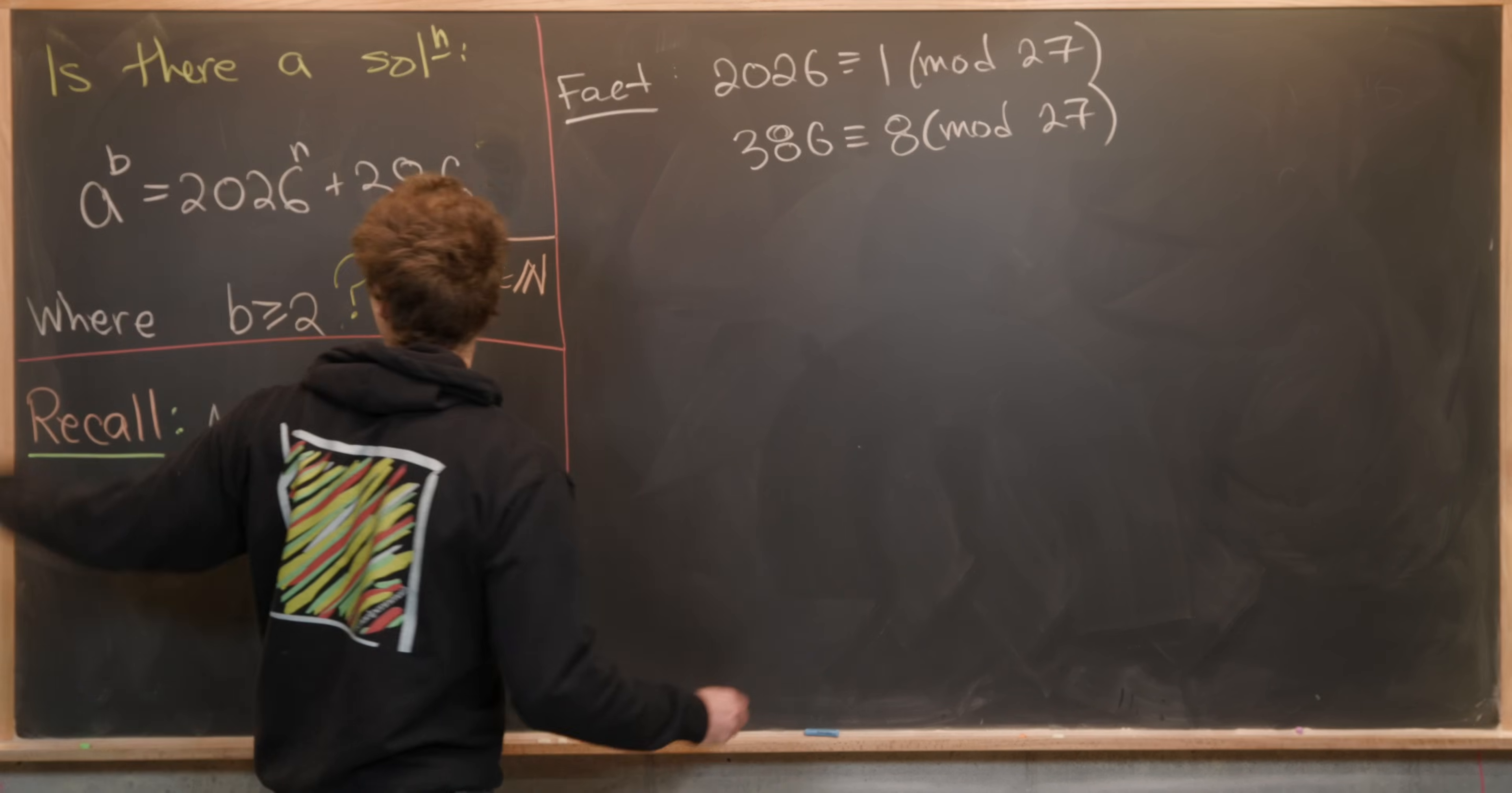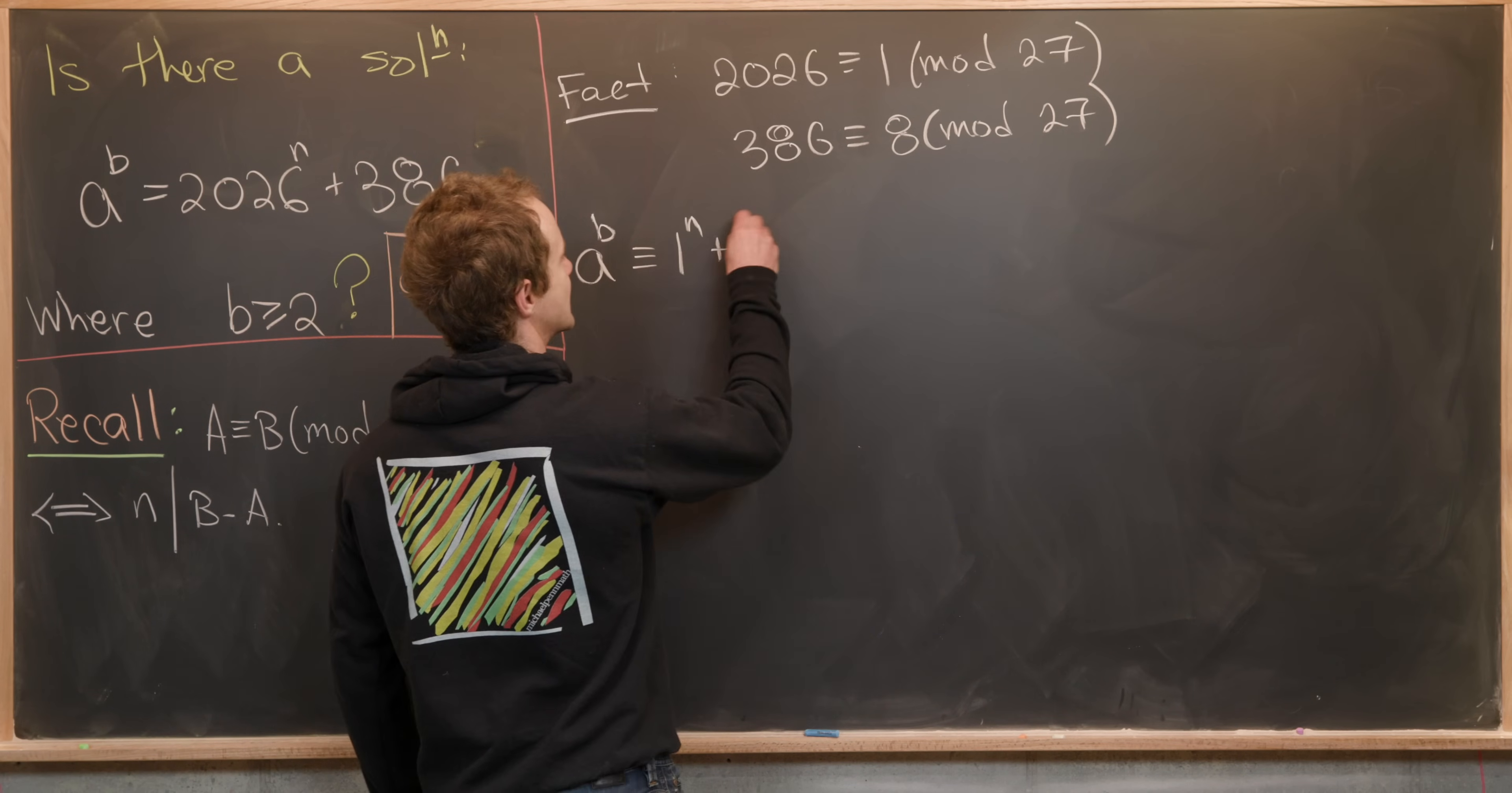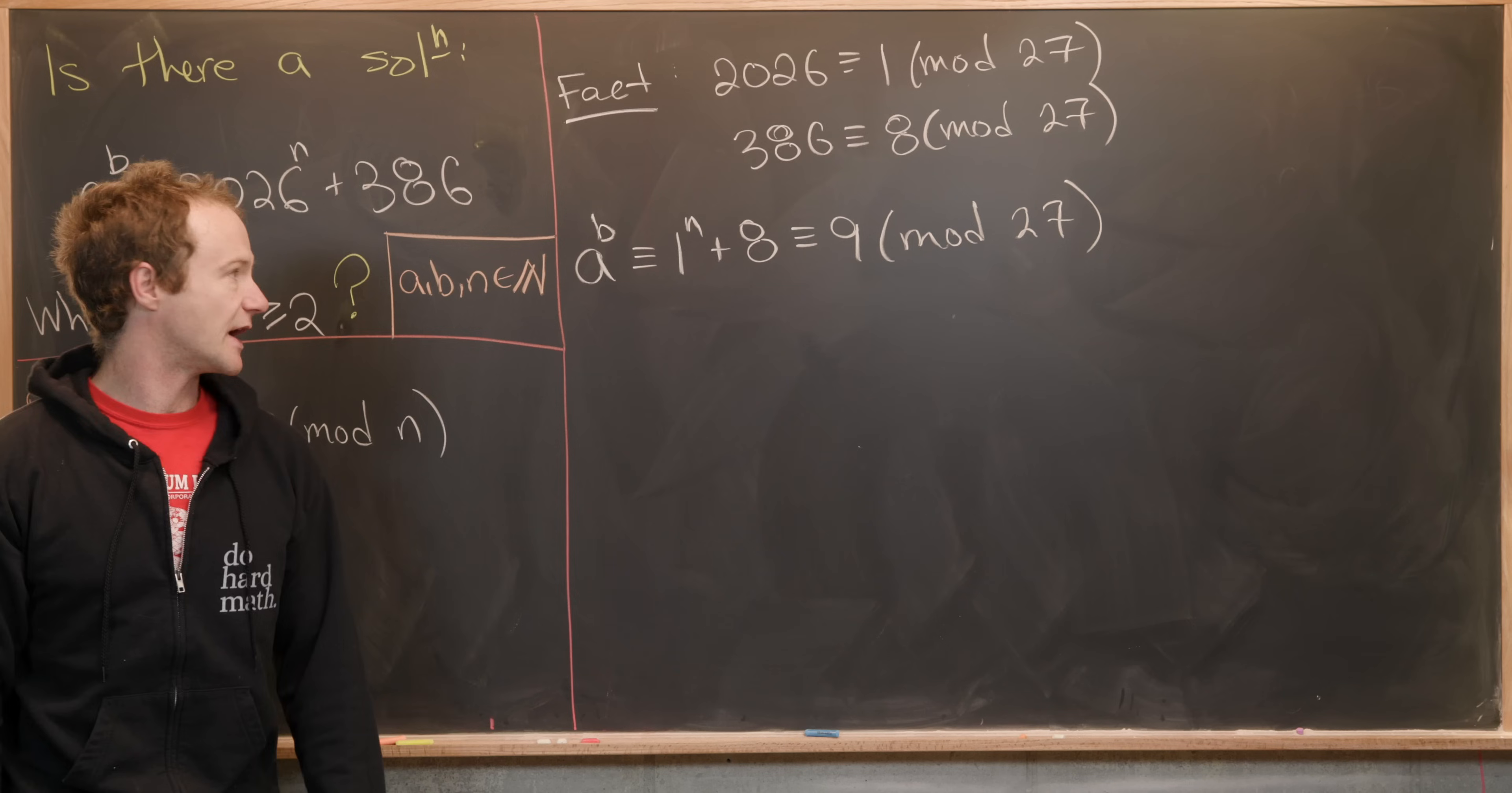So that means our equation turns into the following. We've got a^b ≡ 1^n + 8 ≡ 9 (mod 27). Okay good.